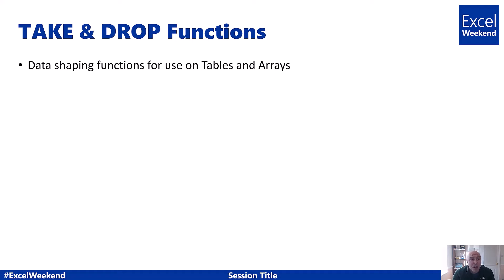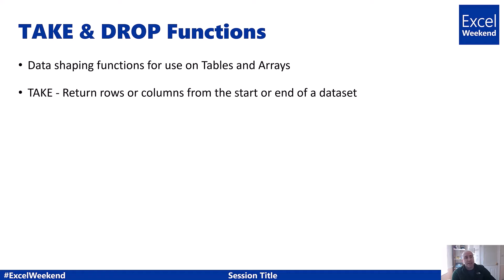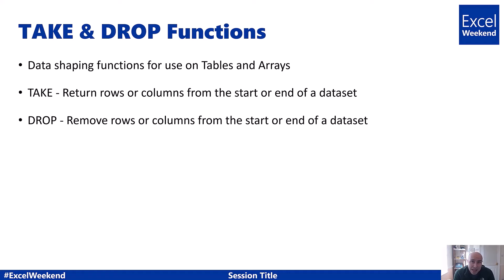The TAKE and DROP functions are data shaping functions built for use on tables and arrays. The TAKE function will return rows or columns from the start or end of a data set. Provide a positive number and it takes from the start; a negative value takes from the end. The DROP function does the same thing except it drops — removes — those rows or columns from the start or end of the data set.